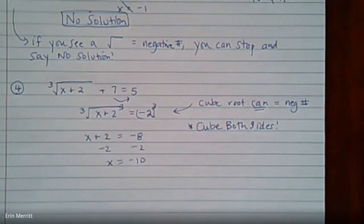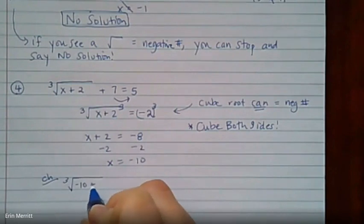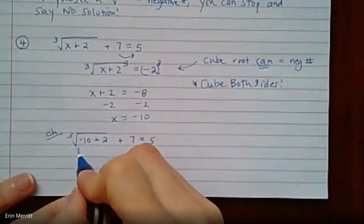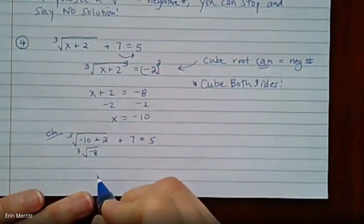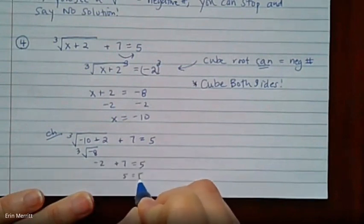Just like any other problem, you do have to check. You plug right back into the original and convince yourself that we didn't make anything up and that this is good. So this comes out to be the cube root of negative 8, which beautifully comes out to be negative 2. And you're going to get 5 on both sides. We're good to go.